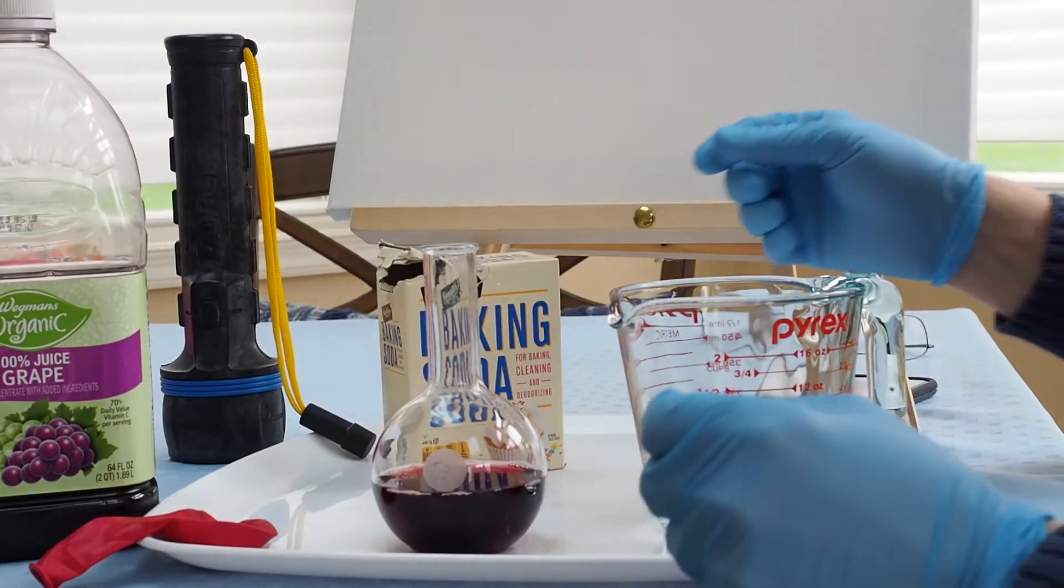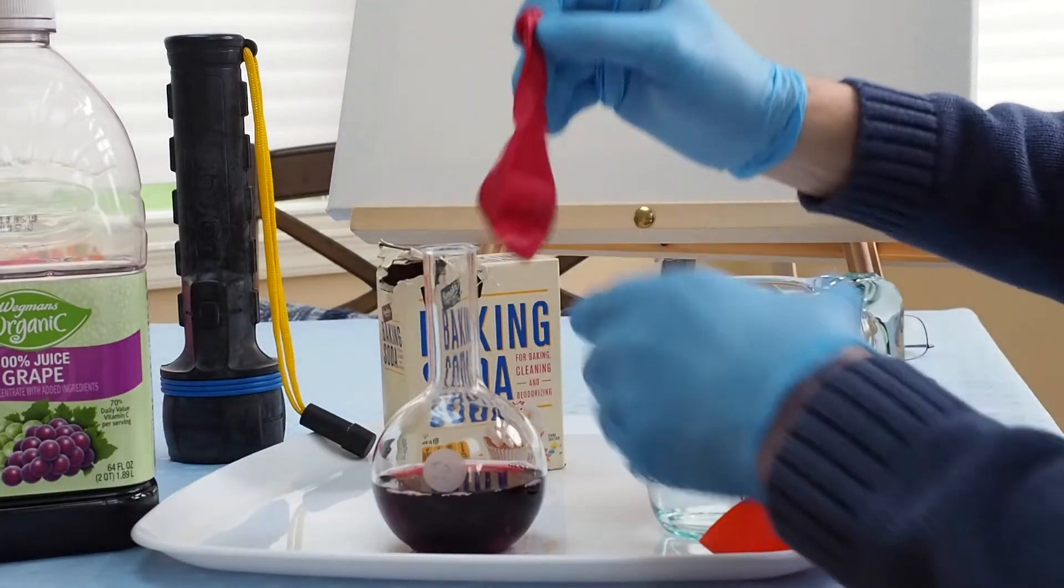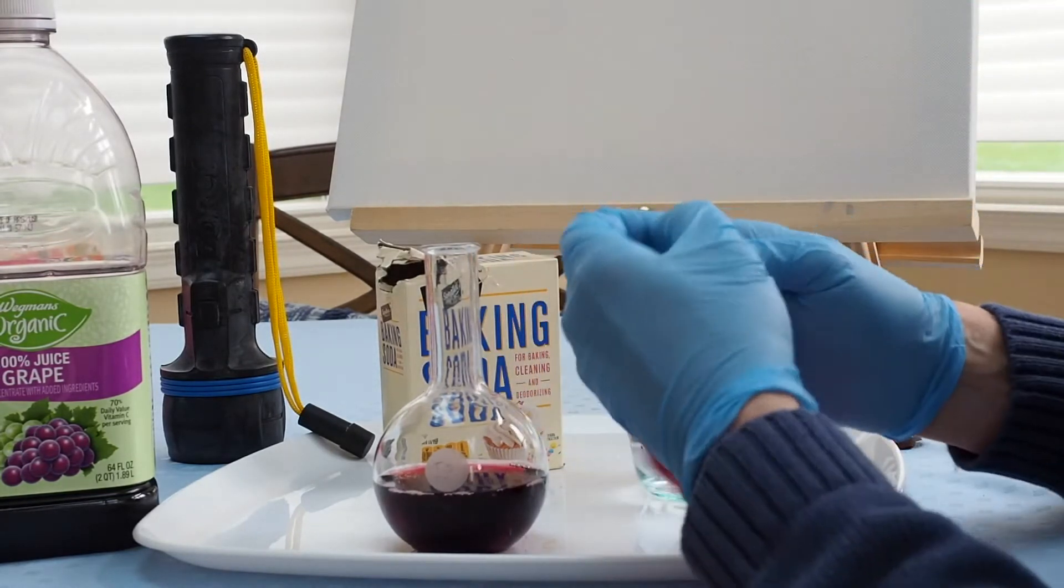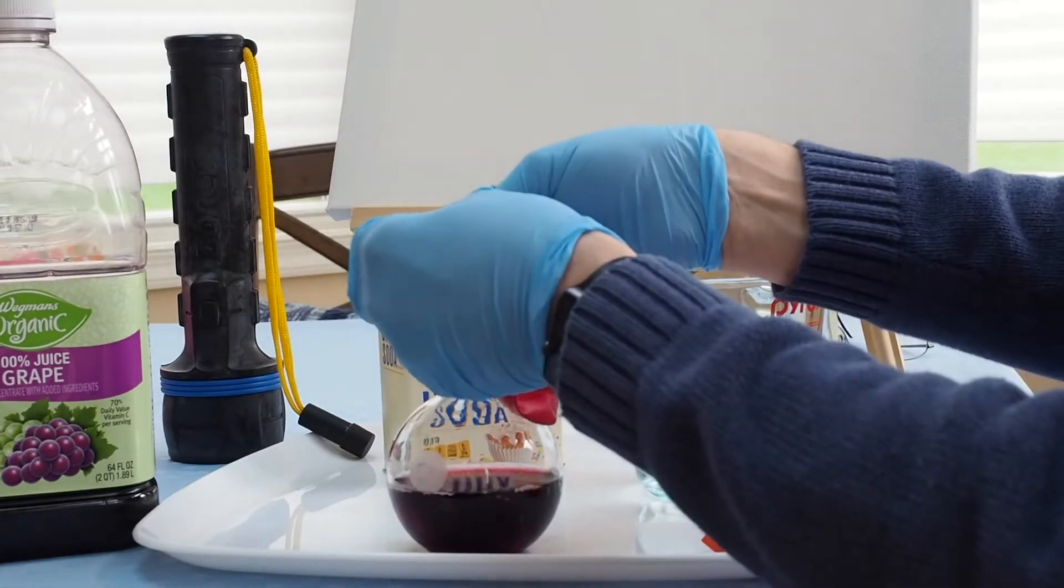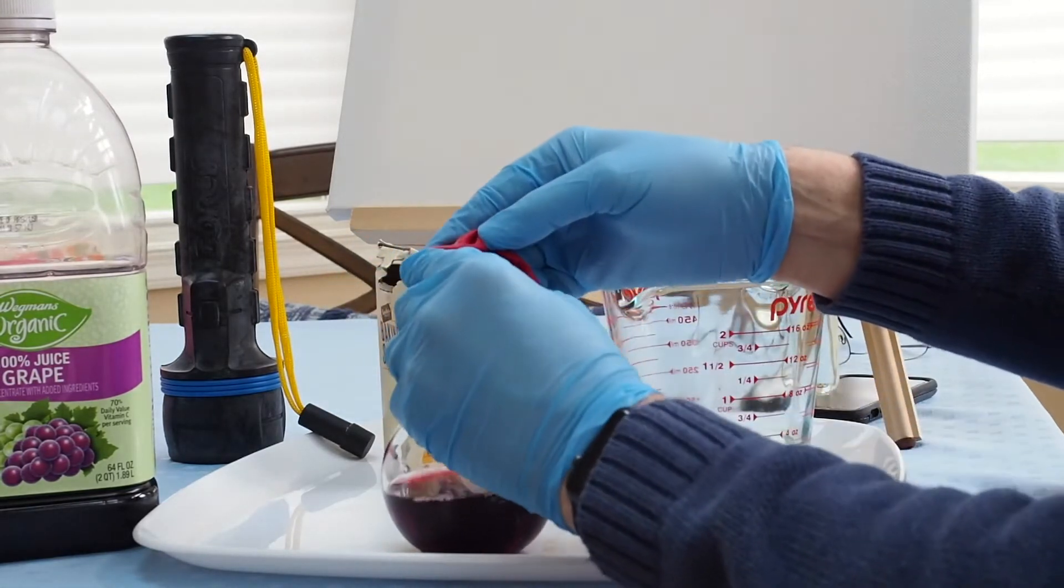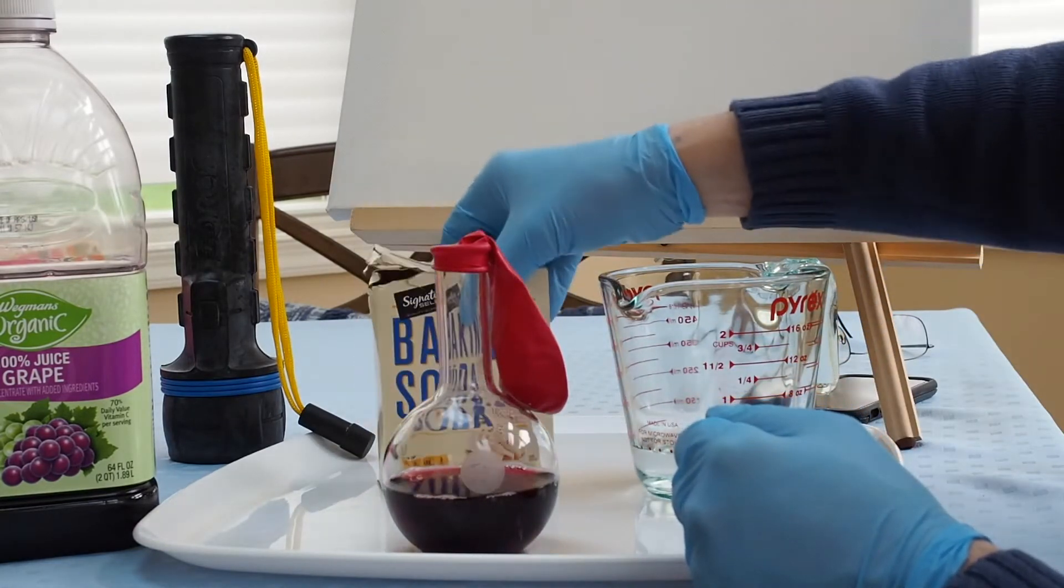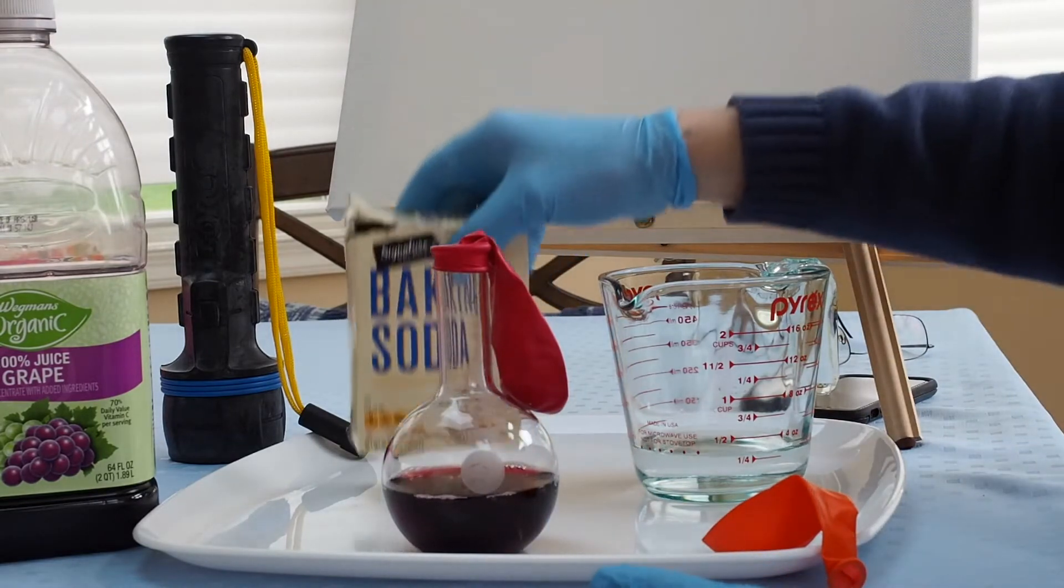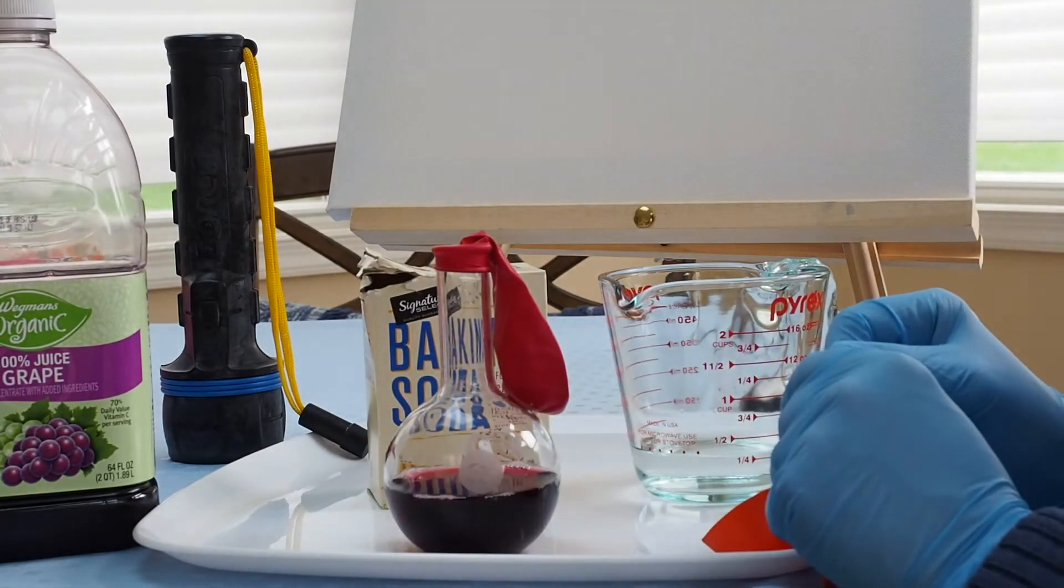So what I'm first going to do is show what can happen with just grape juice and baking soda. Grape juice has what's called citric acid in it, and citric acid will react with baking soda. It's called an acid and base reaction. In this case, it's very easy to see what happens.